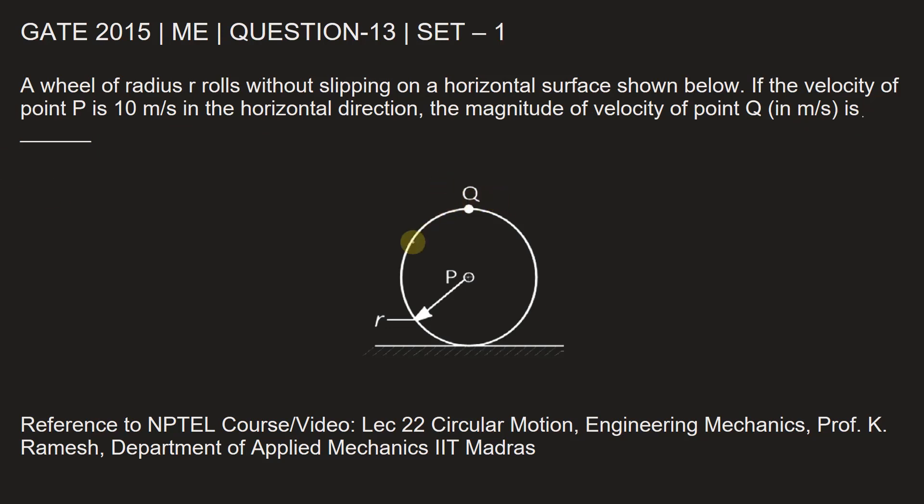It is shown that this wheel rotates as well as moves forward and point P is having a velocity of 10 meters per second. Let's find out the forward velocity of point Q.